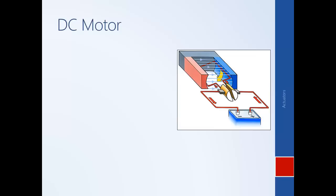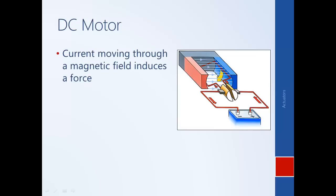Another very important example of an electromagnetic actuator is a DC motor. It works on the basis of Lorentz's law, where a current moving through a conductor in a magnetic field induces a force. Here is the mathematical representation of Lorentz's law. The force is equal to the cross product of the current and the magnetic field. There's a circuit attached to a DC voltage source — DC stands for direct current, so the current always flows in the same direction with a constant voltage.